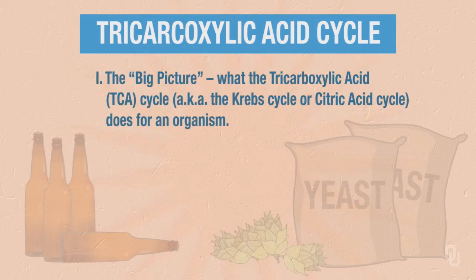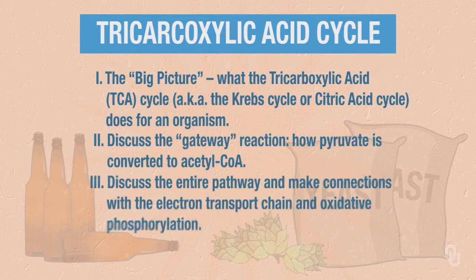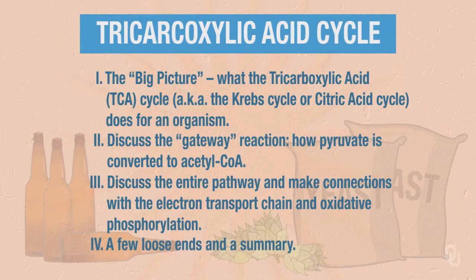We will begin our discussion by considering the big picture: what does the tricarboxylic acid cycle do for an organism? Next we'll discuss the gateway reaction, how pyruvate is converted to acetyl CoA, because it's actually acetyl CoA that enters the citric acid cycle. Then we'll discuss the entire pathway and make connections with the electron transport chain and oxidative phosphorylation. Finally, we'll try to tie up some loose ends and summarize our discussion.